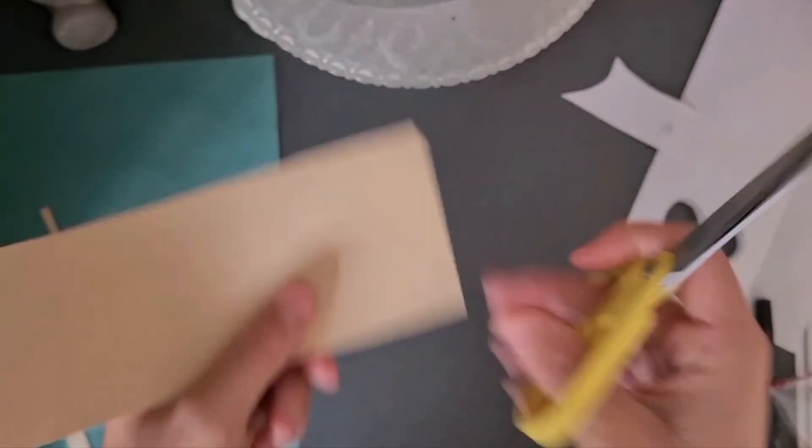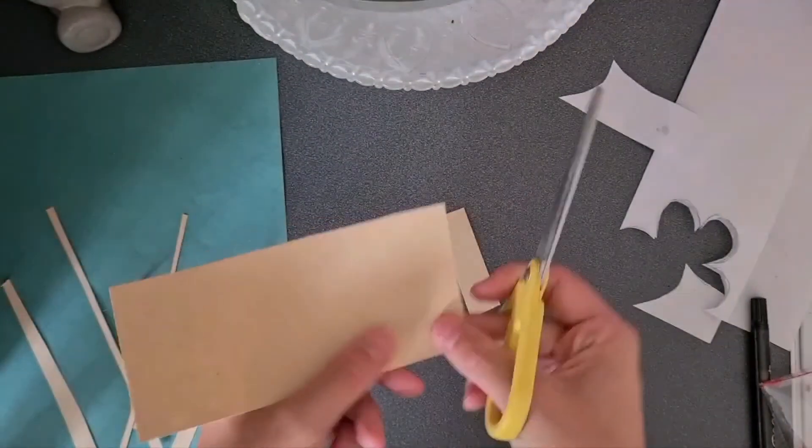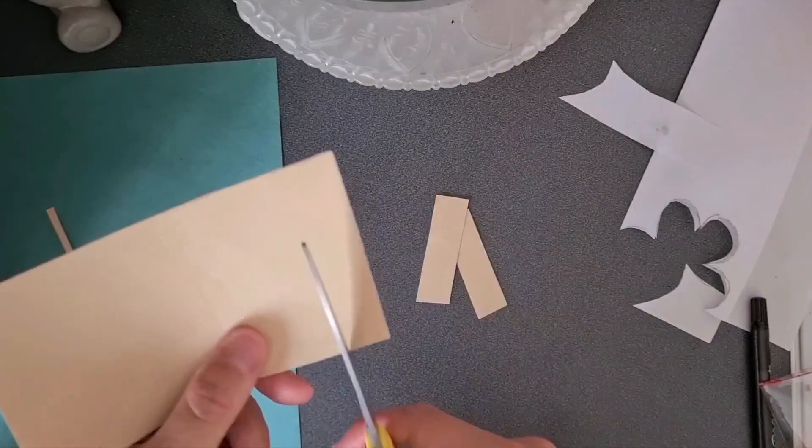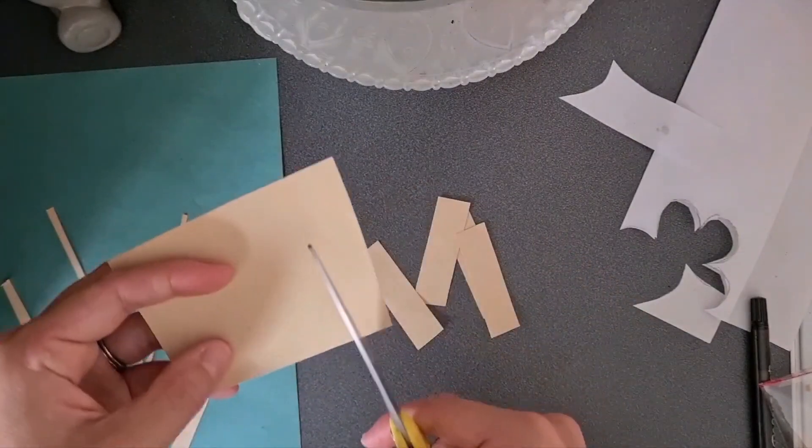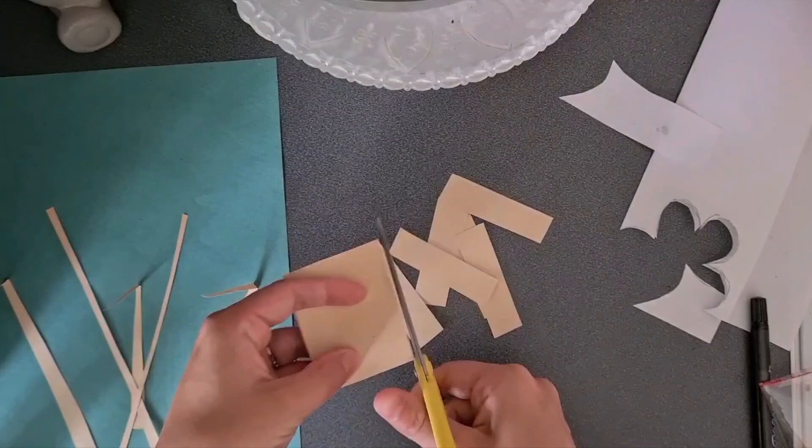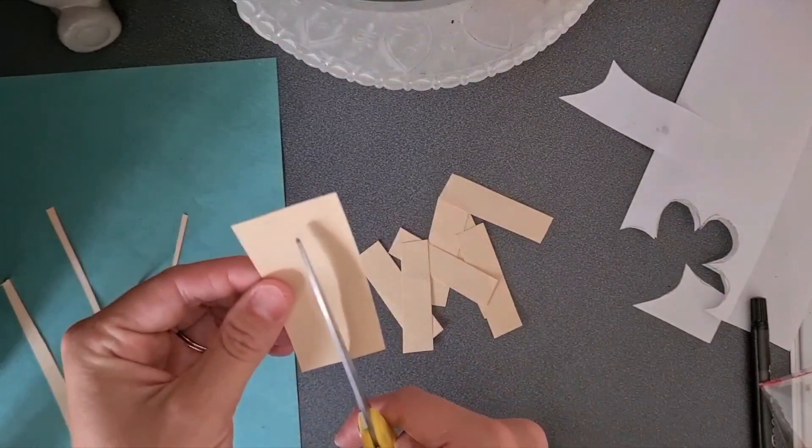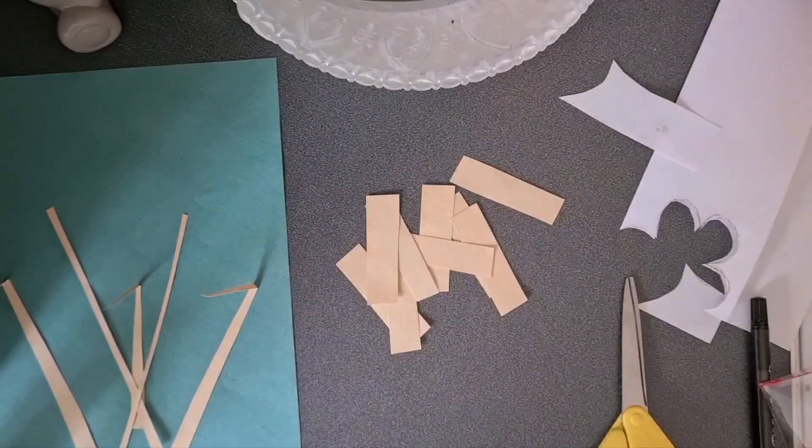And then with the rest of the yellow paper, just cut out some smaller but thicker strips. Just like this. You'll probably need about 20. Just depends how long your other strips have been.